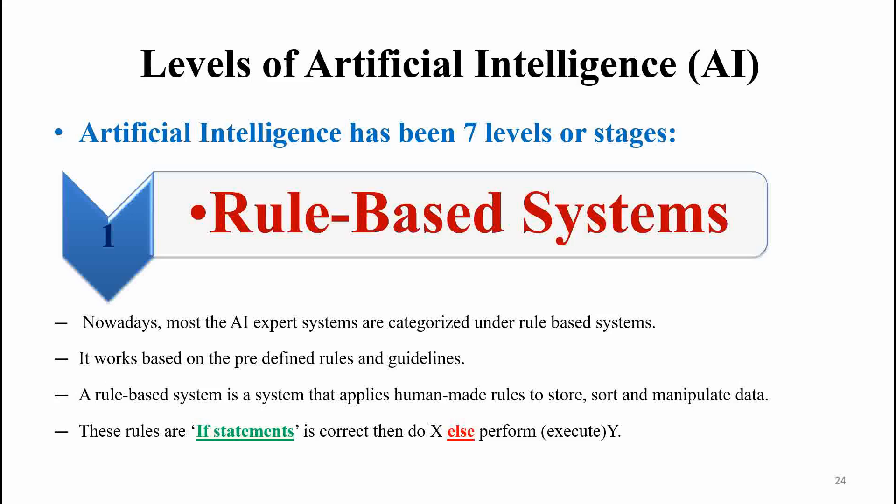So it is like: if the statement is correct, then we have to perform and execute X; else we have to execute Y. Based on these rules, those rule-based systems perform different types of activities based on predefined rules and guidelines. Many systems which are rule-based are involved with previously defined rules and language-based strategies.